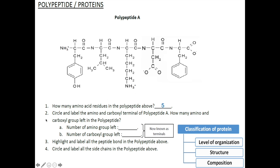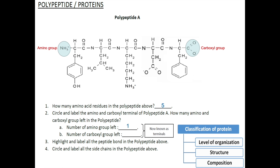Question 2: Circle and label the amino and carboxyl terminal of polypeptide A. And how many amino and carboxyl groups are left in the polypeptide? This is the amino group. This is the carboxyl group. Although polypeptide A is made up of 5 amino acid residues, each with their own carboxyl and amino group, because these groups are spent in the formation of peptide bonds, there is only one amino group left and one carboxyl group left.